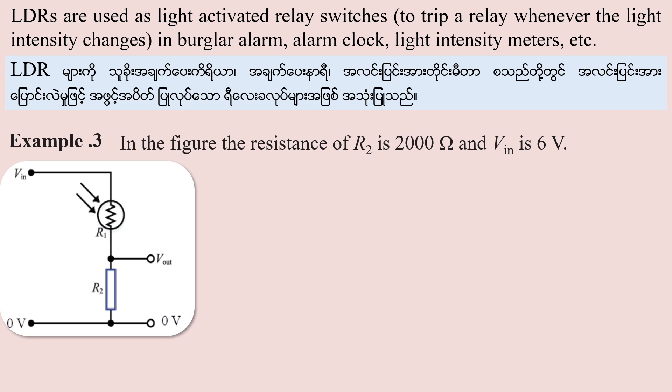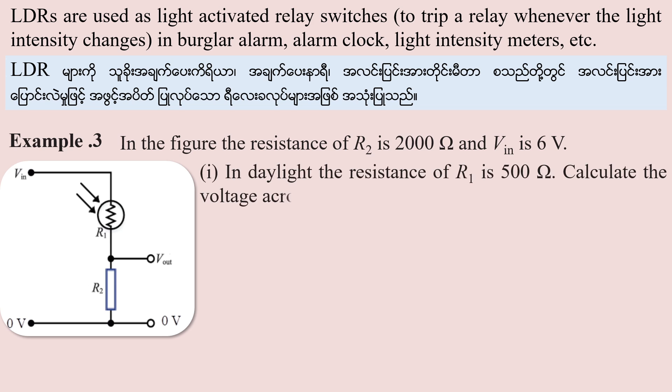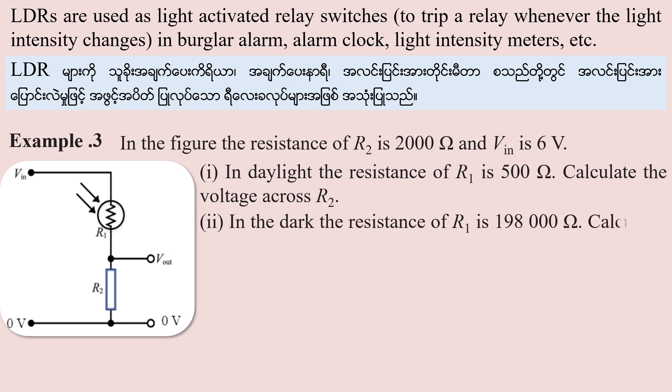Example 3: In a potential divider circuit, in daylight the resistance of R1 is 500 ohms — calculate the voltage across R2. In the dark, the resistance of R1 is 198,000 ohms — calculate the voltage across R2.